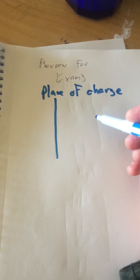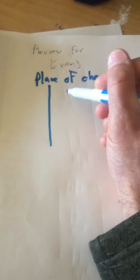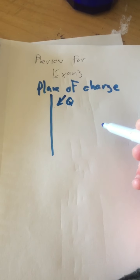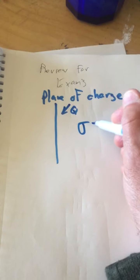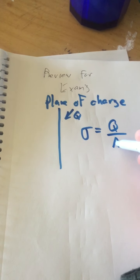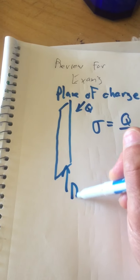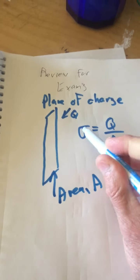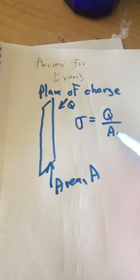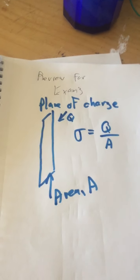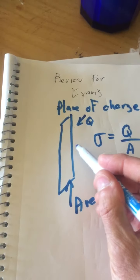One of the topics is electric fields associated with a plane of charge. You have a certain amount of charge Q that you put on the plane, and it spreads itself out and becomes a charge density, which is equal to Q divided by the area of the plane. The charge density for a plane of charge is Coulombs per square meter, and that is what you use to determine the electric field strength near the plane.